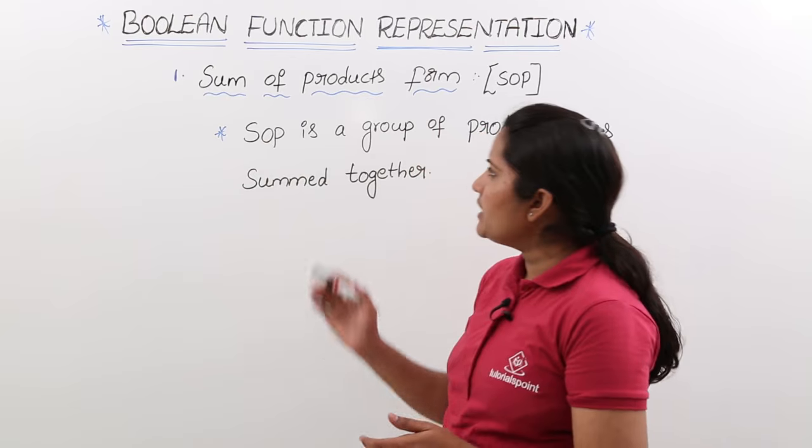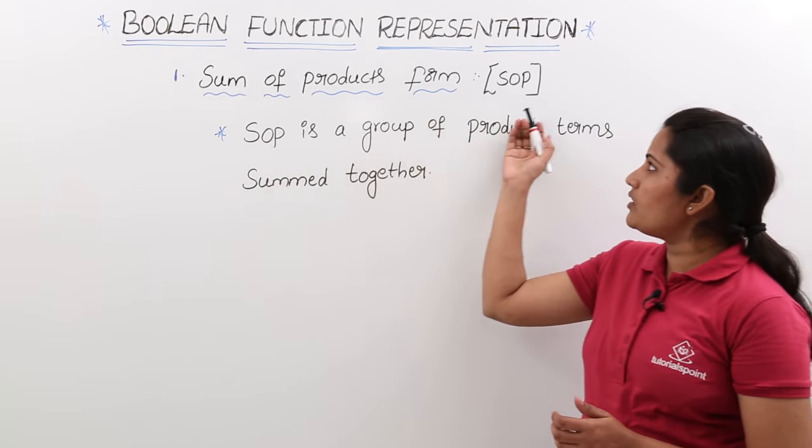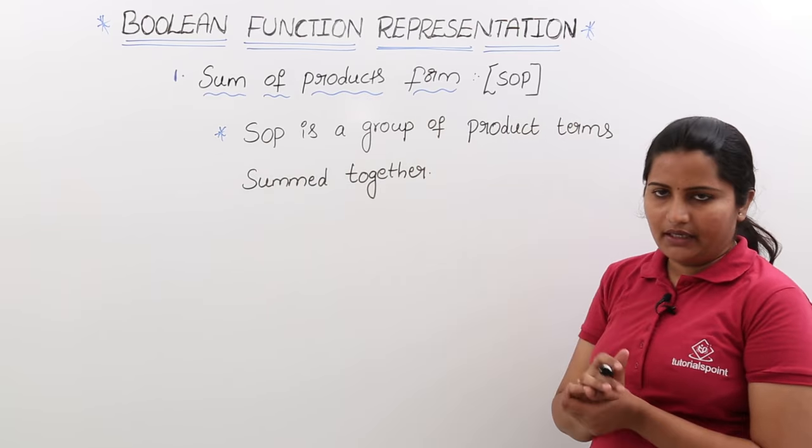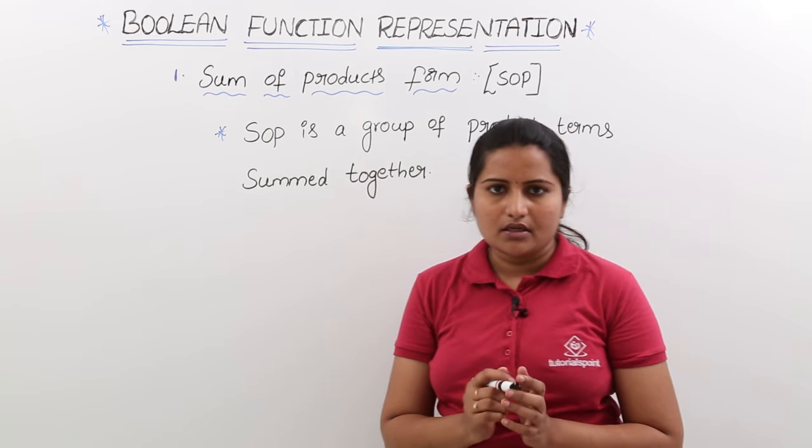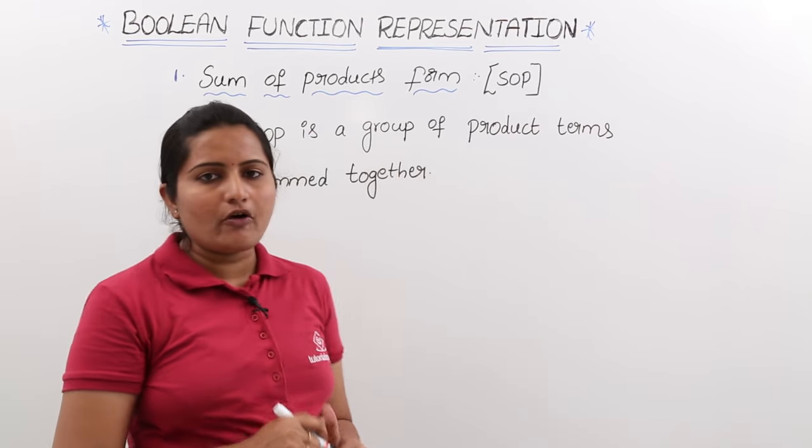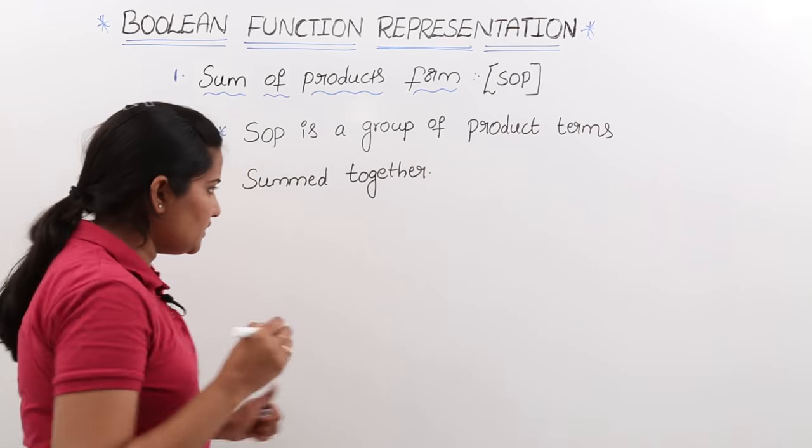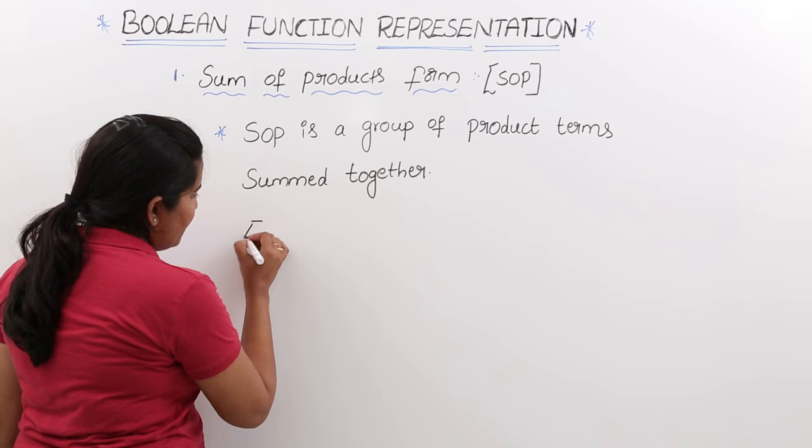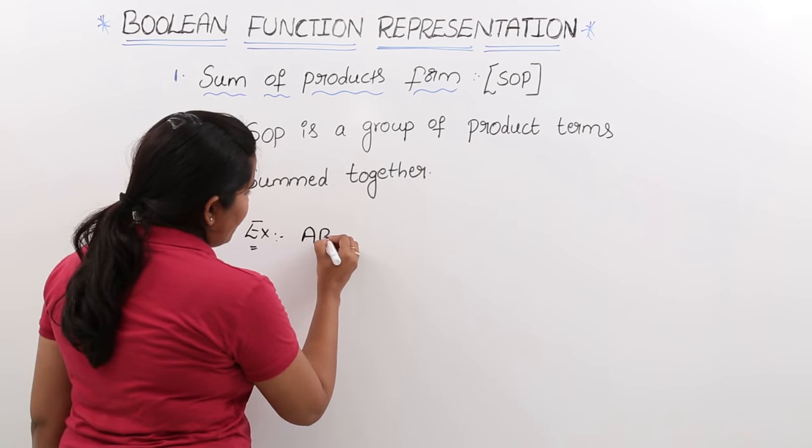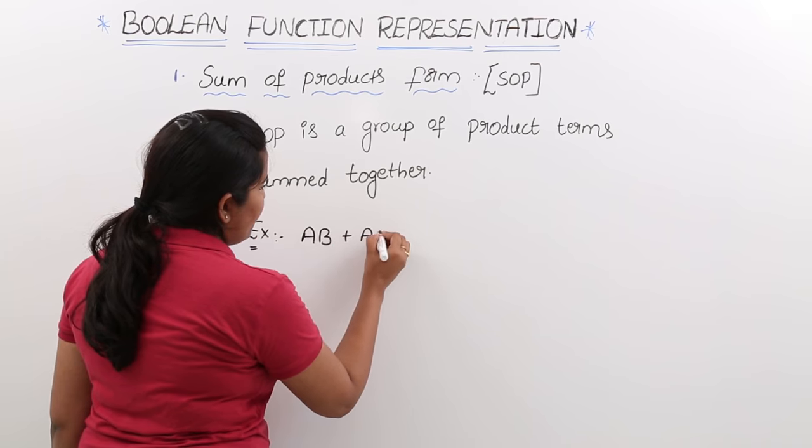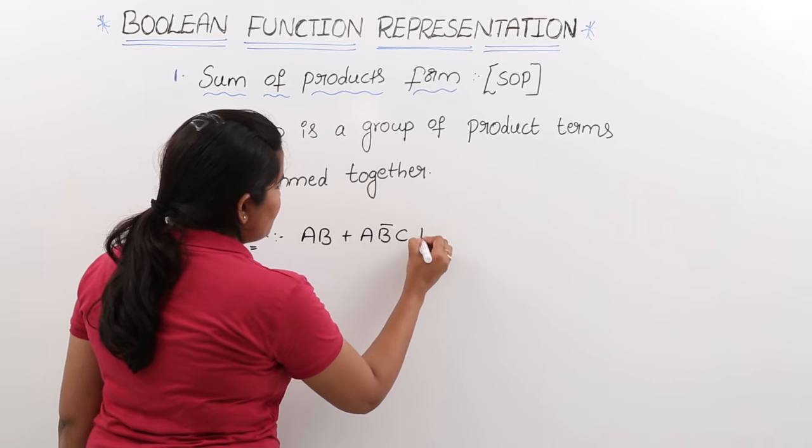See the definition here: sum of products form, also known as SOP. SOP is a group of product terms summed together. For example, we can take AB plus AB bar C plus BC.